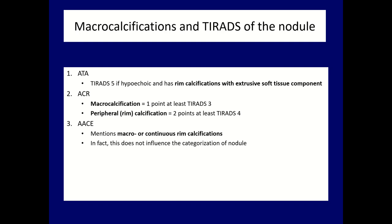The ETA states that if we see any form of macro-calcification, it is worth one point, and if this is a peripheral type — rim calcification — then two more points should be added to the calculation. It means that if we see a macro-calcification, the lesion is at least a TIRADS 3.